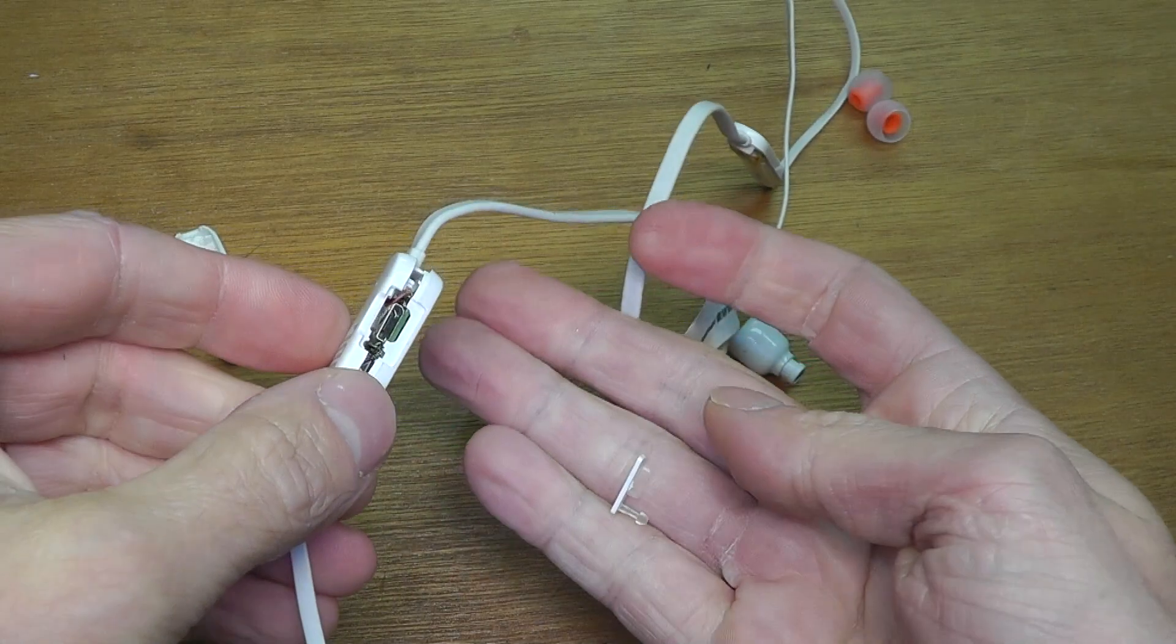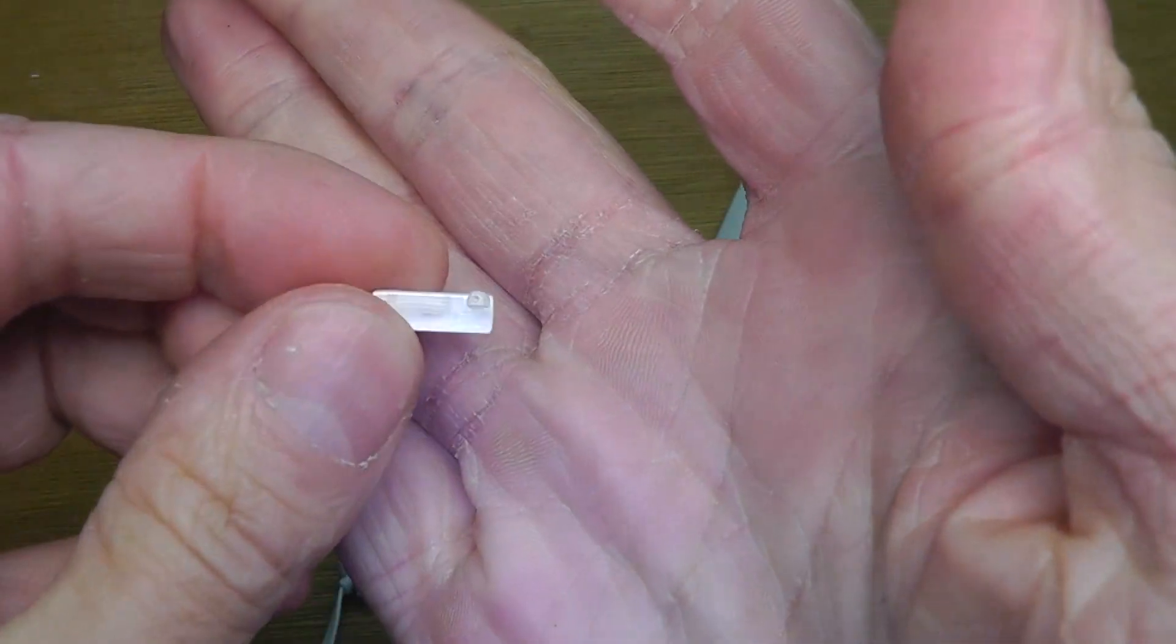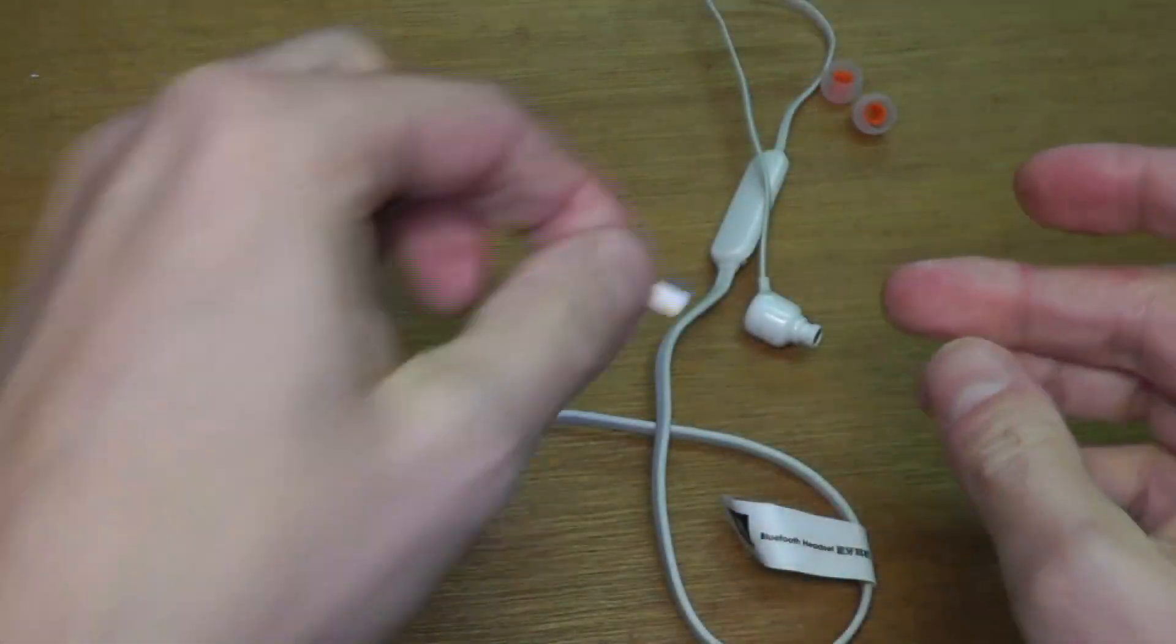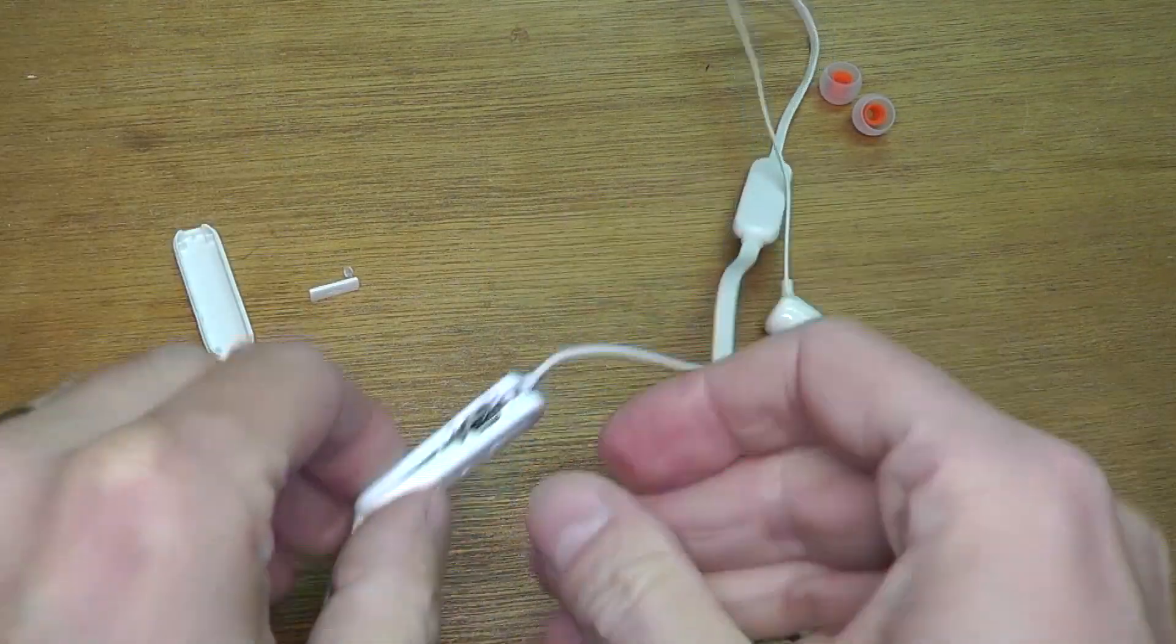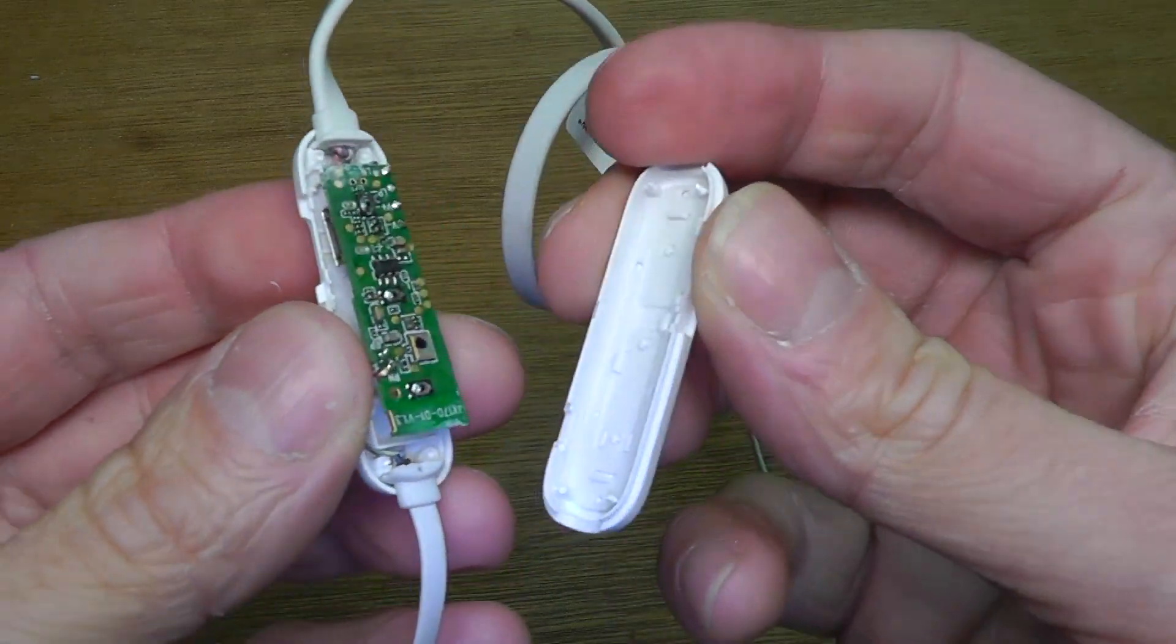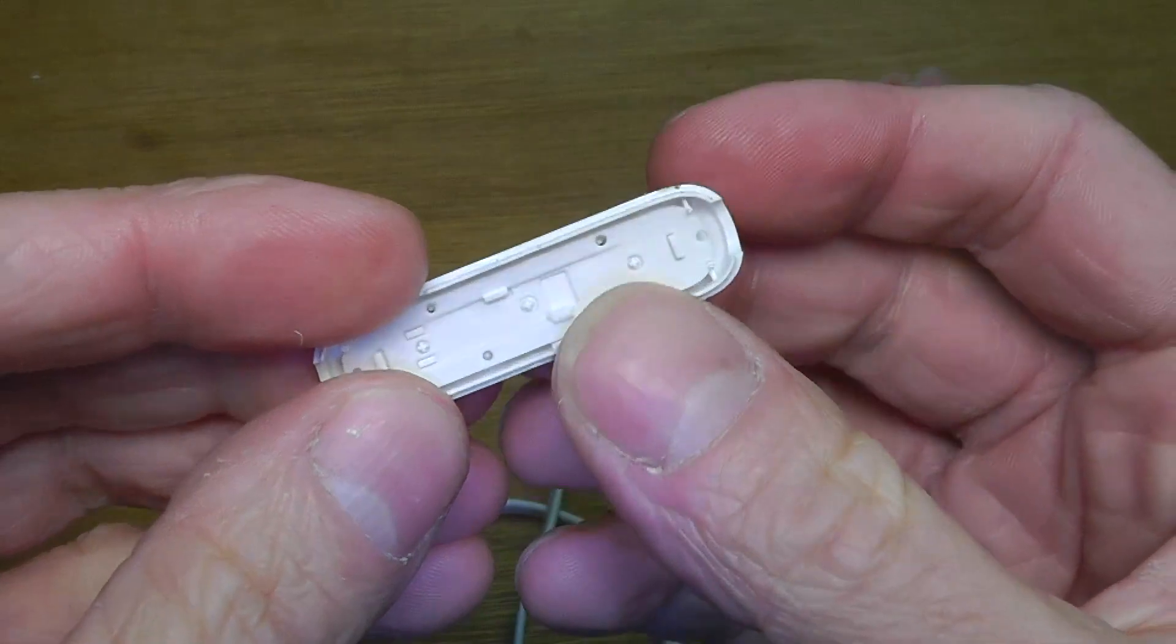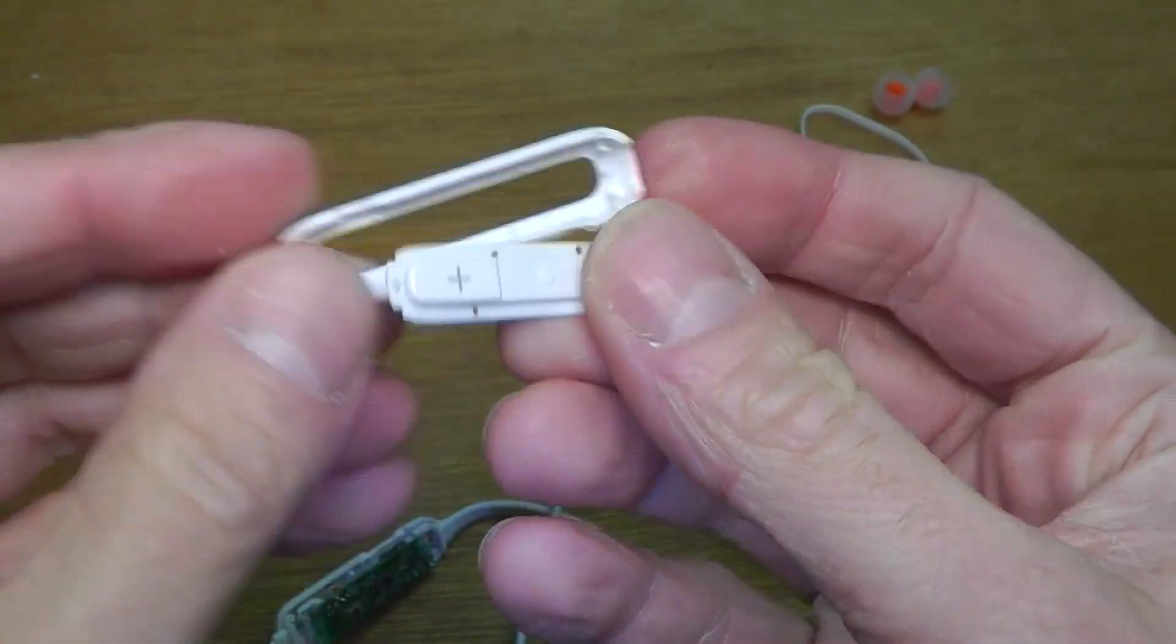Here we have the cover for the micro USB charging port that just folds off, and then here we have the top part of the remote. This is also two pieces - the outside of the frame and then the buttons. The buttons are one piece, all three buttons together.